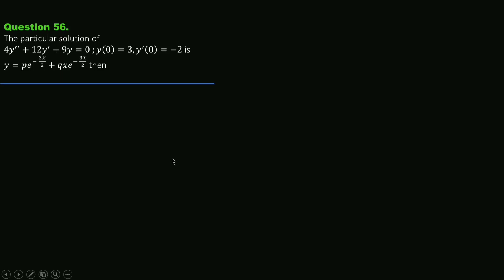Question 56 asks about the particular solution of 4y'' + 12y' + 9y = 0, with initial conditions y(0) = 3 and y'(0) = -2. The solution is given by y = P·e^(-3x/2) + Q·x·e^(-3x/2). What are the values of P and Q?